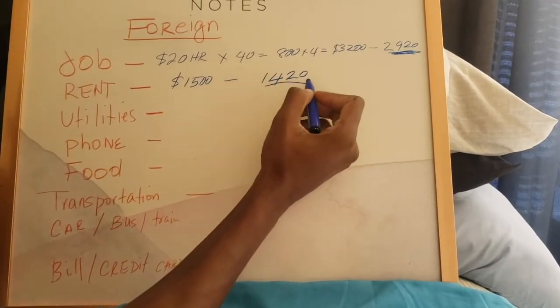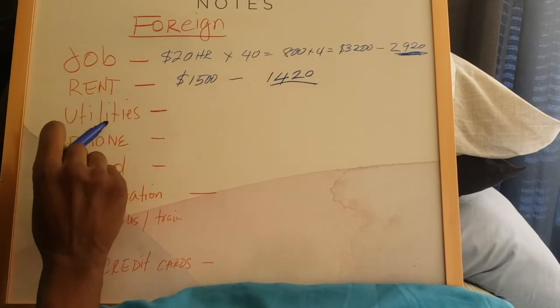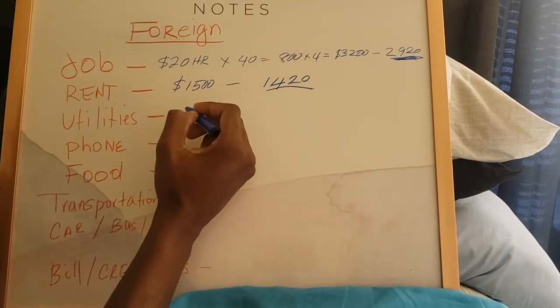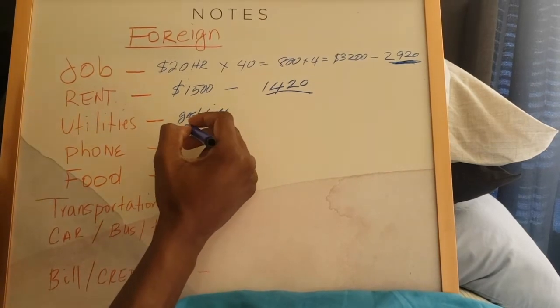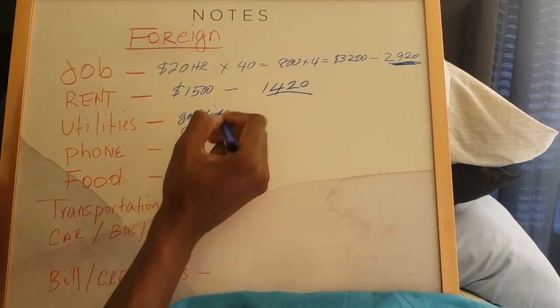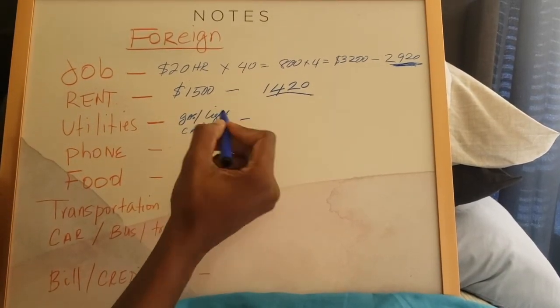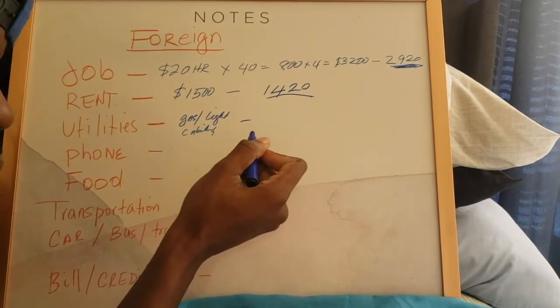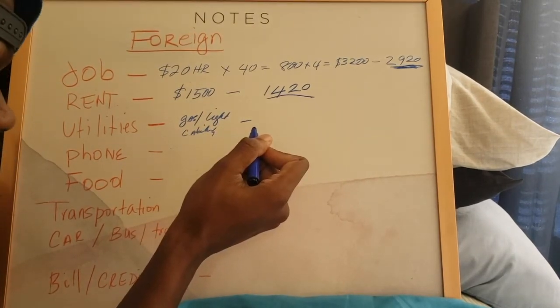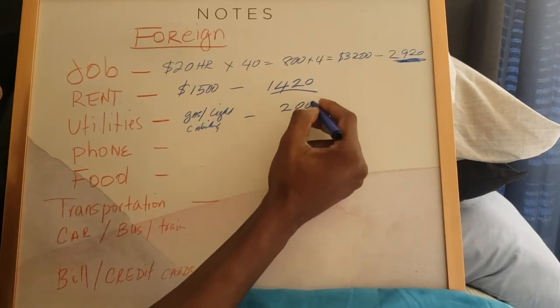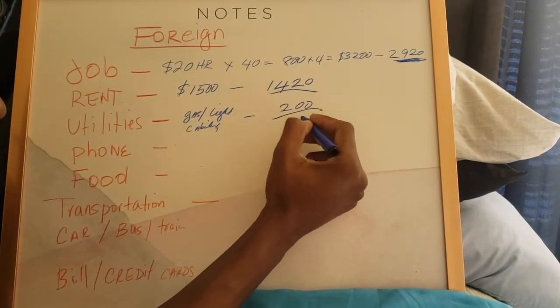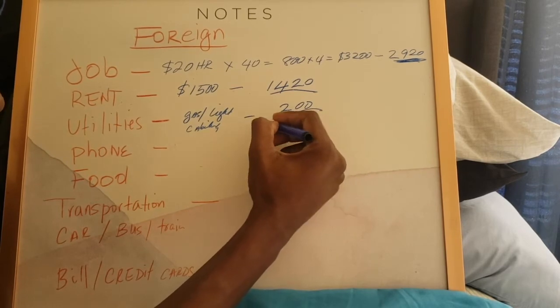This is what you have left for the month. Then, if you live somewhere, you have utilities like gas and light. Then you have cable, you might have cable. You're going to put this gas and light plus cable to around, let's just say, $200. So I'm going to take off $200 for that. This is what you have left for the month, $1,220.